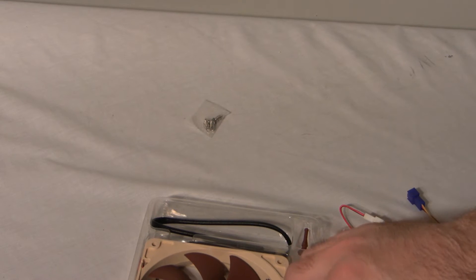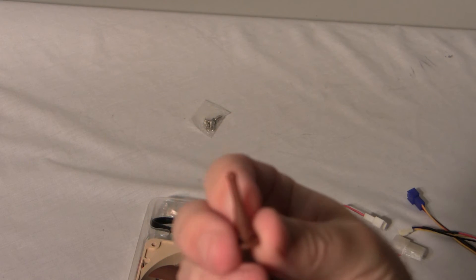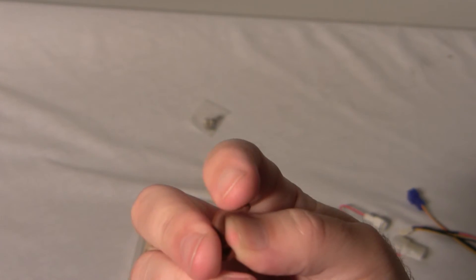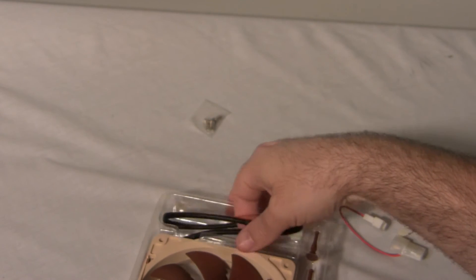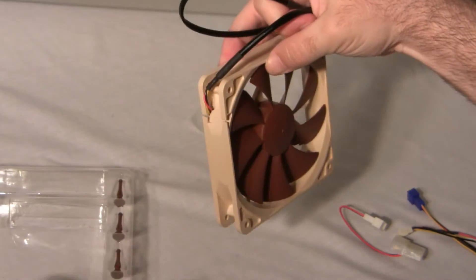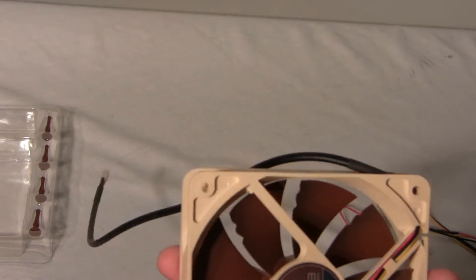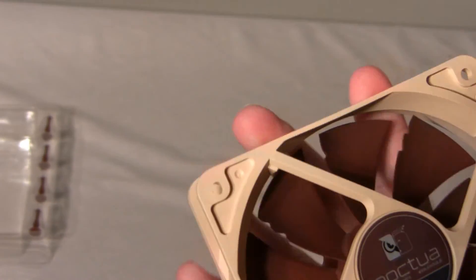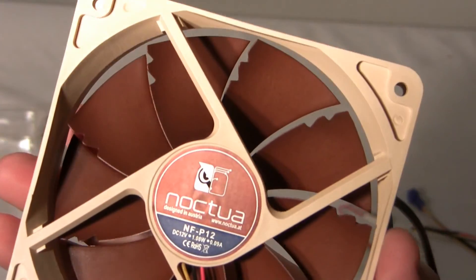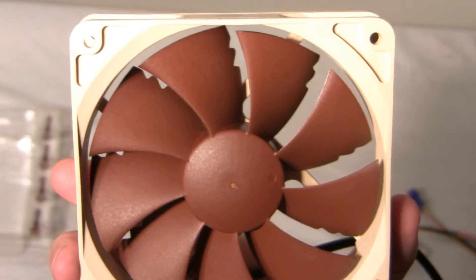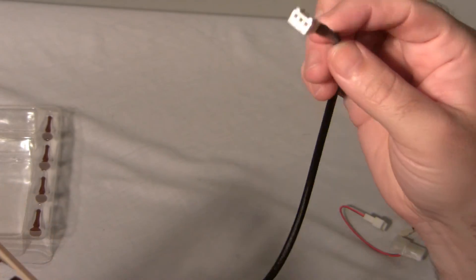We also get four metal fan screws, along with four soft silicone fan mounts for anti-vibration. Here's the fan itself, the front of the fan with some vortex notches in it, and the back of the fan.